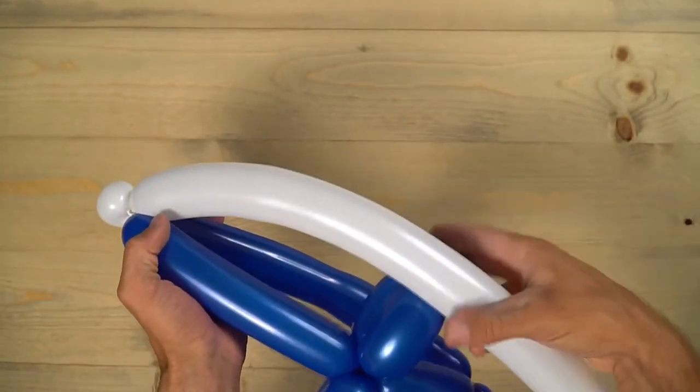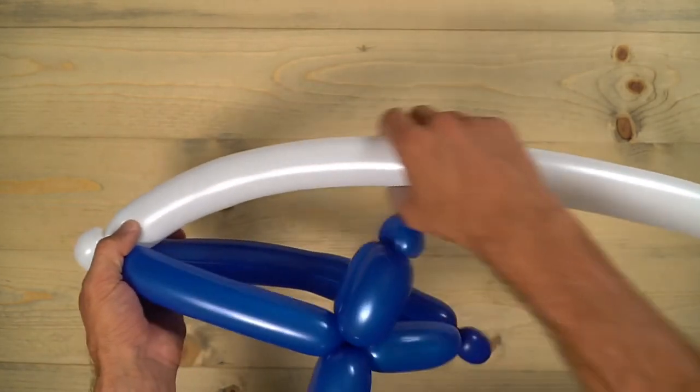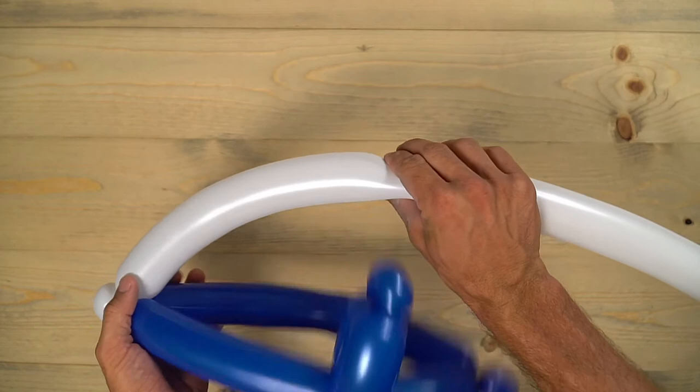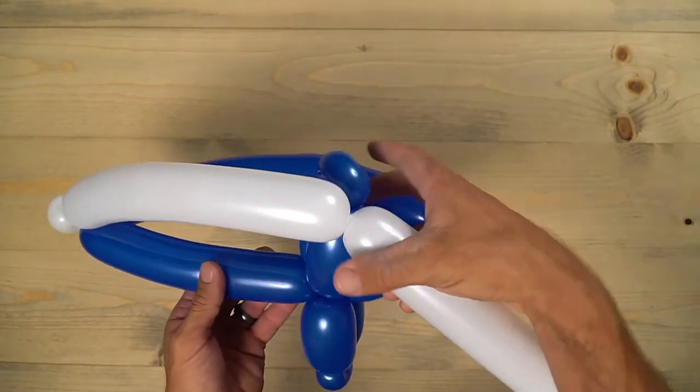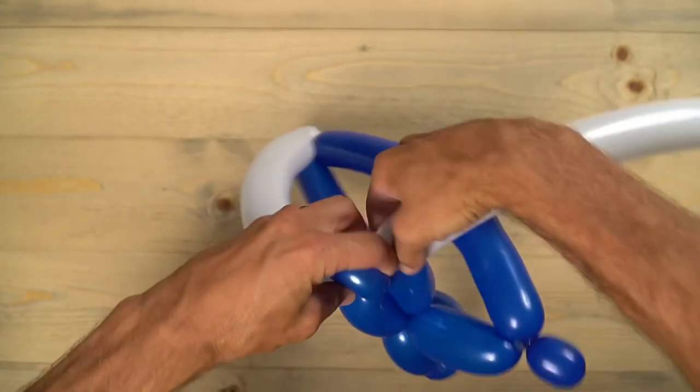Now we're going to go down the sides of the shield there. So I like to arc it where I think it looks good. And then I pick my spot to make a twist. Twist it right there. And now I have that pinch twist we made earlier to lock it in place. Bring that around.